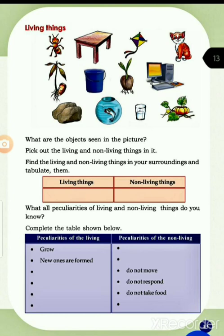What are the objects seen in the picture? Pick out the living and non-living things in it. Find the living and non-living things in your surroundings and tabulate them. Living things from the picture: ant, cat, plants, coconut plants, fish, and pumpkin. Non-living things: table, bucket, kite, computer, stone, and glass.